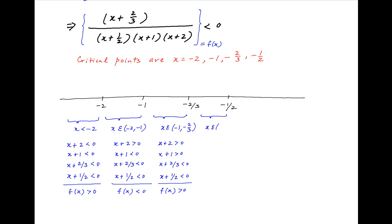We next evaluate the interval where x lies between minus 2/3 and minus 1/2. Here (x plus 2) is positive, (x plus 1) is positive, (x plus 2/3) is positive, and (x plus 1/2) is negative in this interval.